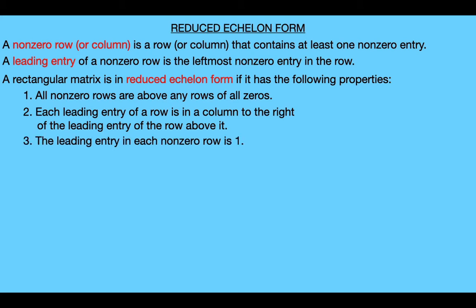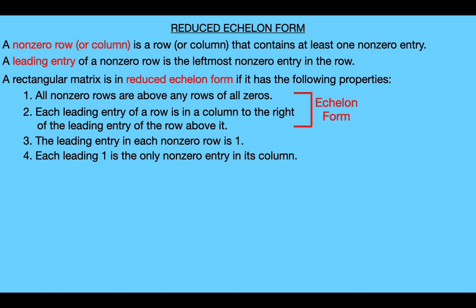Third, the leading entry in each non-zero row must be equal to one. And fourth, each leading one is the only non-zero entry in its column. Now if a rectangular matrix has only the first two properties, we say that matrix is in echelon form, which has fewer requirements than reduced echelon form.